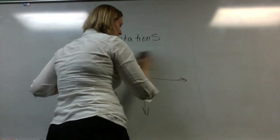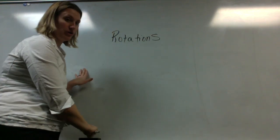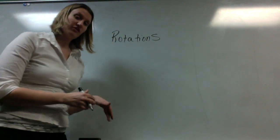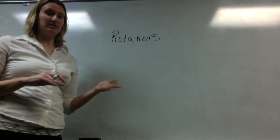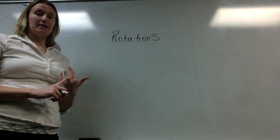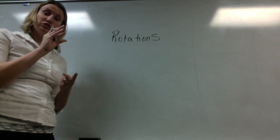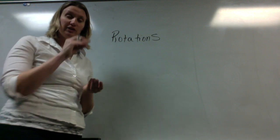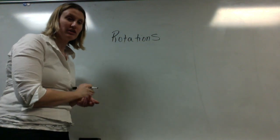Rotations are not as easy as translations and reflections on the coordinate plane, so the easiest way to do this is to stick to a general rule of thumb. The rotations we're going to do in eighth grade are going to stick to 90, 180, and 270 degrees. Basically, 90 degrees is one 90-degree movement, 180 is two 90-degree movements, and 270 degrees would be three 90-degree movements in the counterclockwise direction.